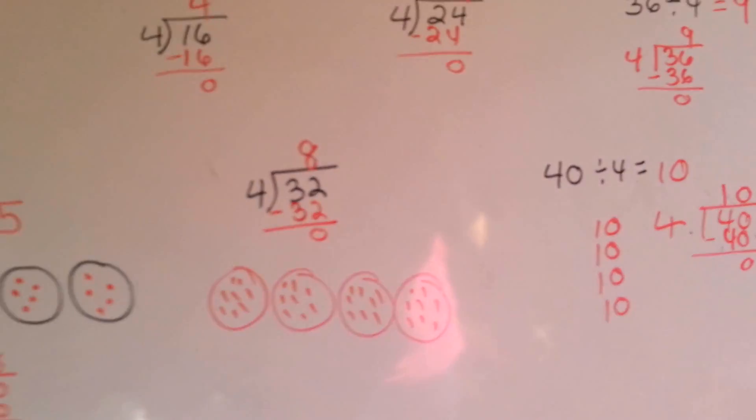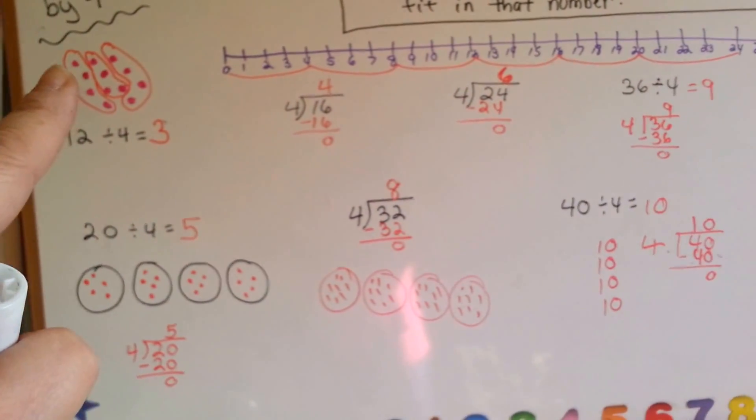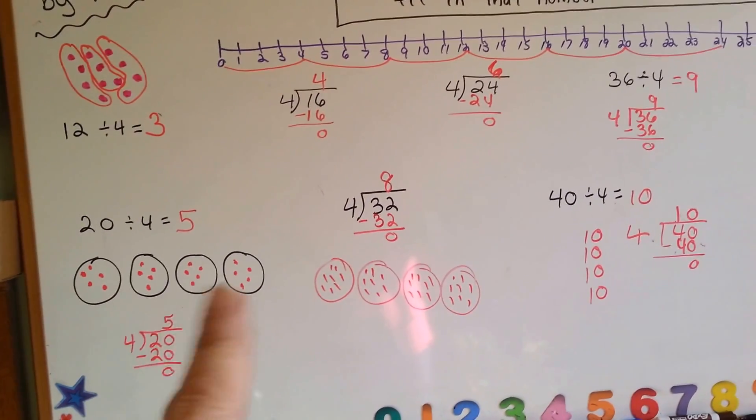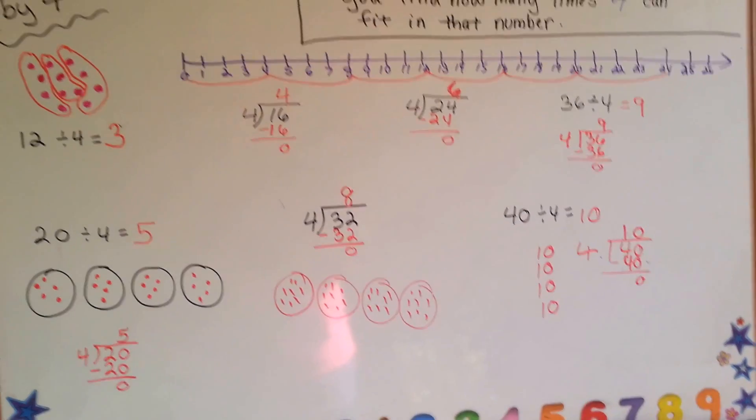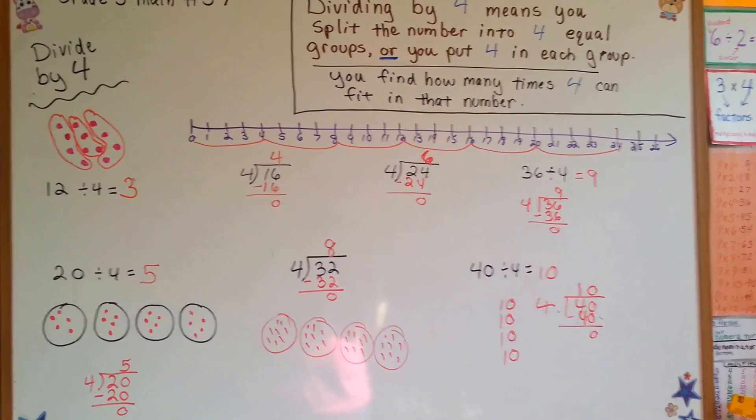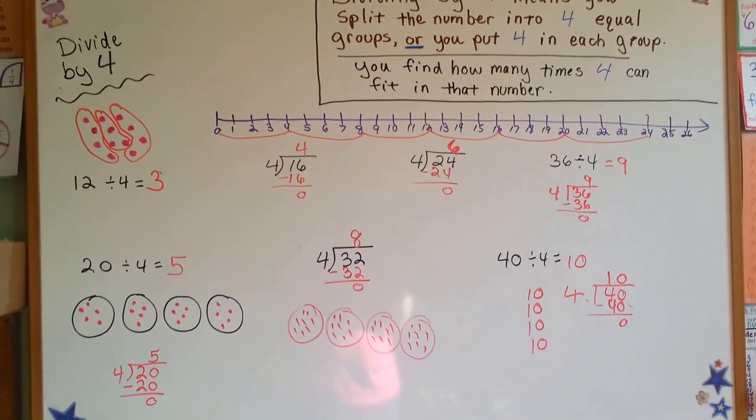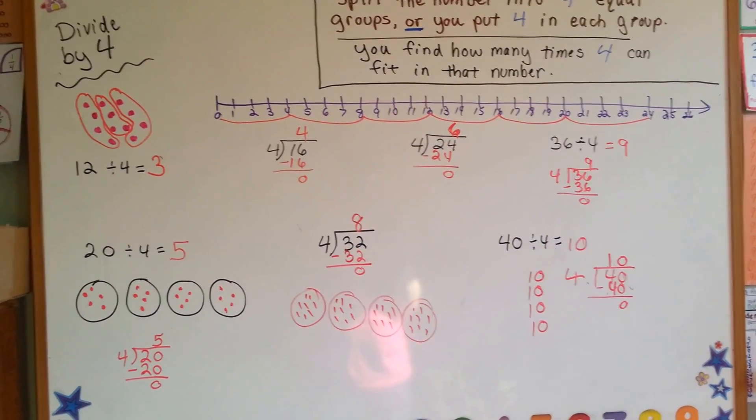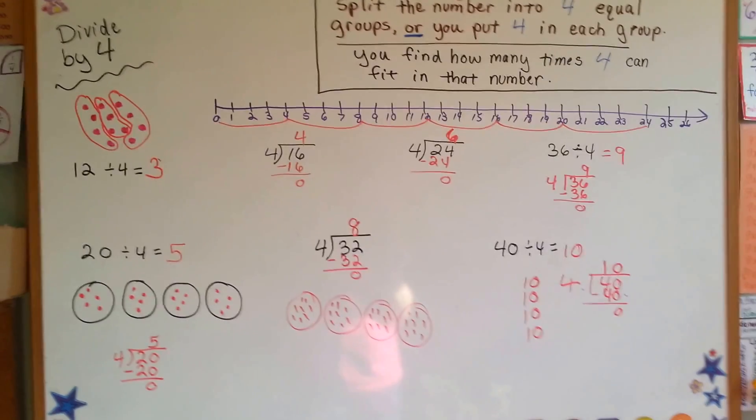And that's how you divide by 4. Remember, you can use the number line, you can circle some dots, or you can draw the 4 groups and fill them in, counting, giving each one a turn. You want to split the number into 4 equal groups. You want to see how many times 4 can fit into that number. Memorize that times table. You're doing a great job. Keep up the good work and I'll see you in the next video.